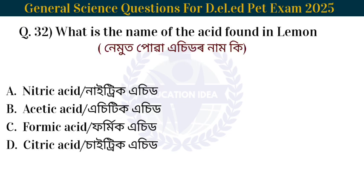Next question: What is the name of the acid found in lemon? The acid found in lemon is citric acid.